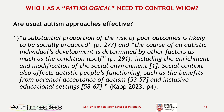Another quite important quote from Stephen Capp: 'A substantial proportion of the risk of poor outcomes is likely to be socially produced, and the course of an autistic individual's development is determined by other factors as much as the condition itself, including the enrichment and modification of the social environment. Social context also affects autistic people's functioning, such as benefits from parent-accepted autism and inclusive educational settings.' This is quite important because there seems to be some research indicating that a similar kind of thing is happening with PDA.